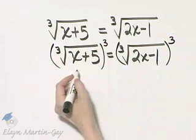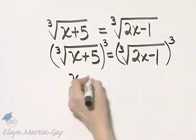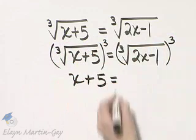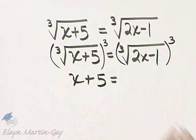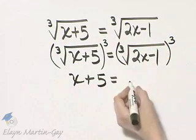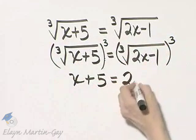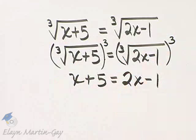Now this is the cube root cubed, so I have the radicand x plus 5 is equal to - again, this is a cube root that is cubed - so this equals the radicand 2x minus 1.